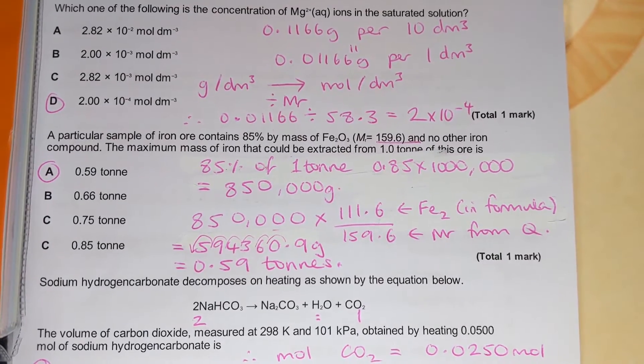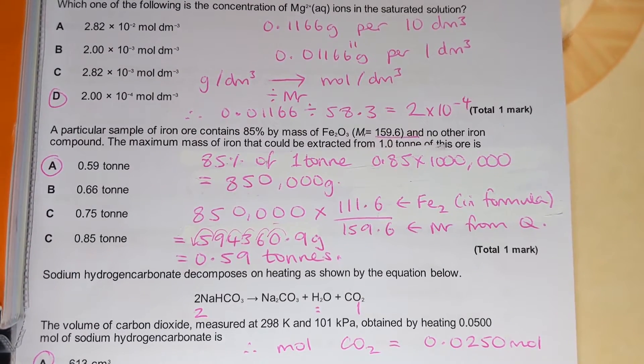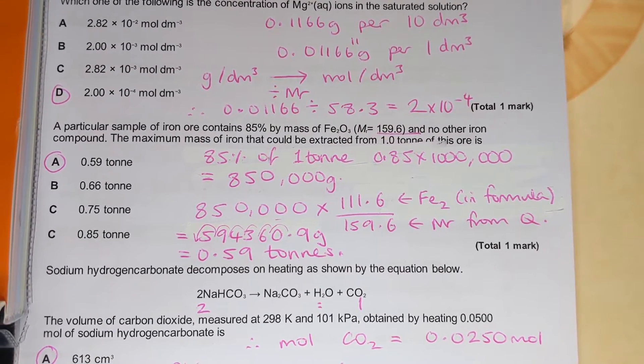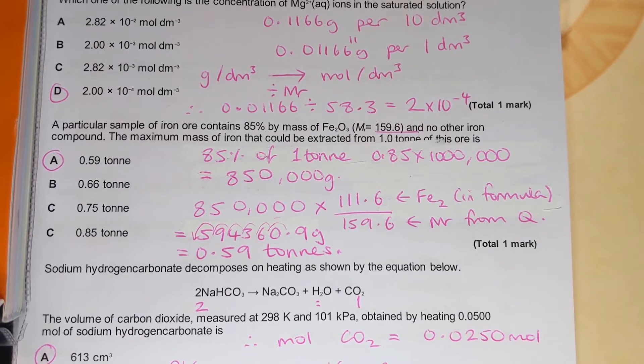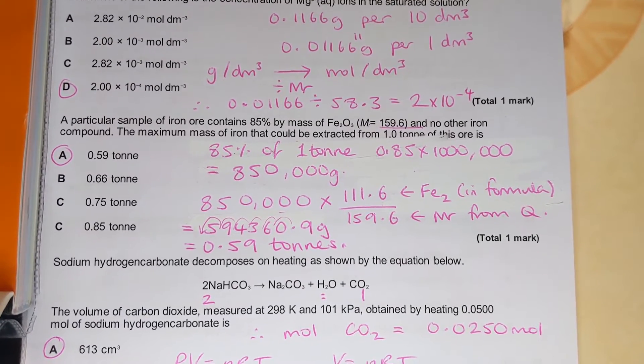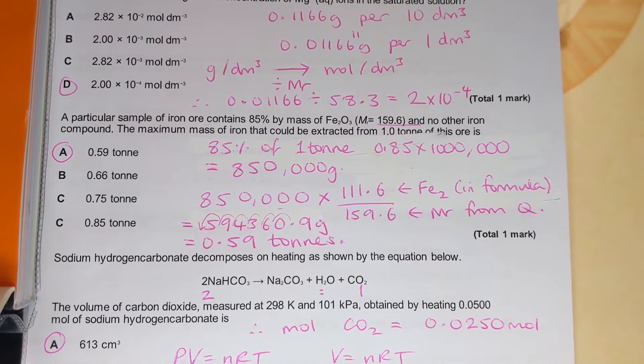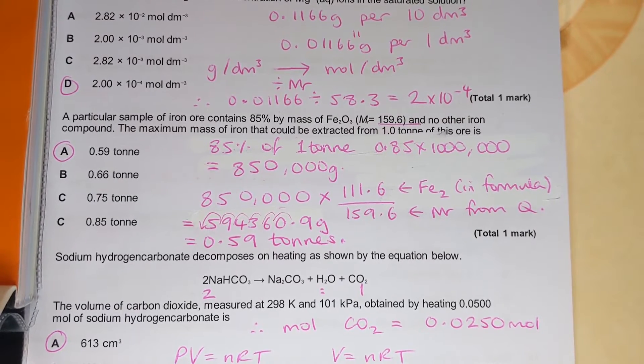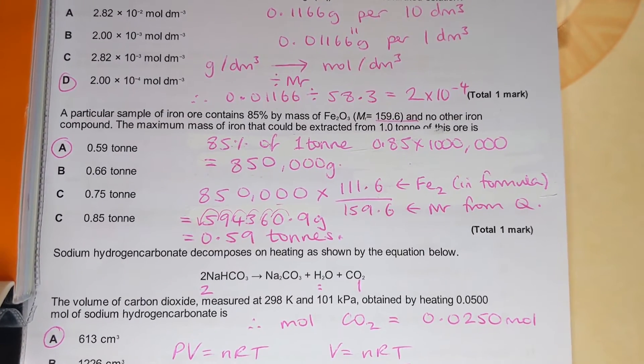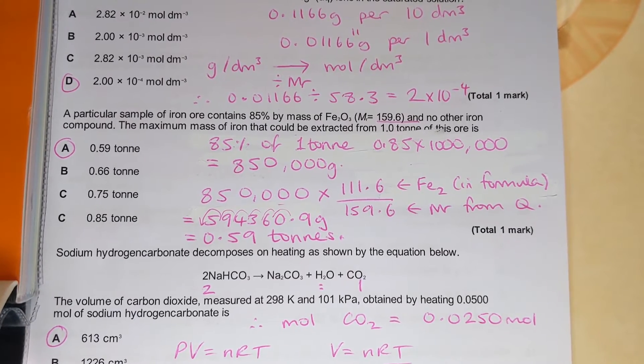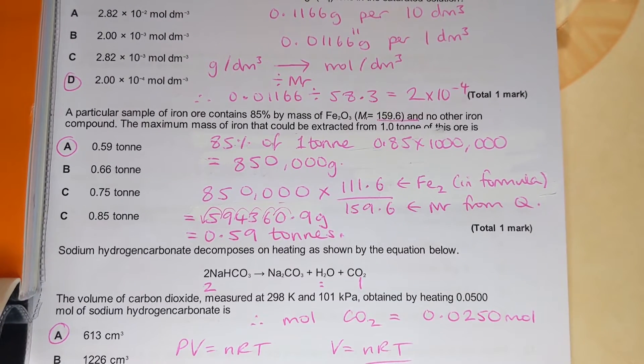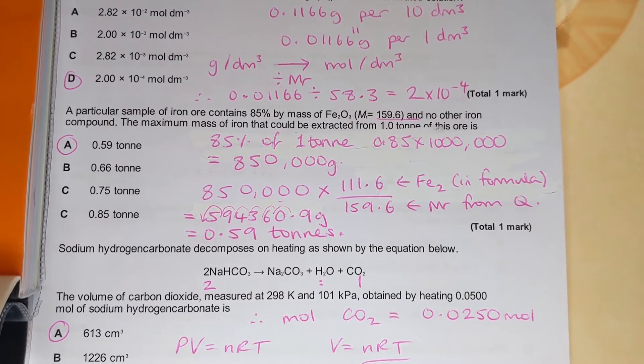Next one: a particular sample of iron ore contains 85 by mass of iron oxide, so that's fe3 plus fe203, and no other iron compound. The maximum mass of iron that could be extracted from one ton of this ore is. Now there's several ways you can get to the answer. If you've used a different method feel free to post that in the comments below, someone else might find that helpful.